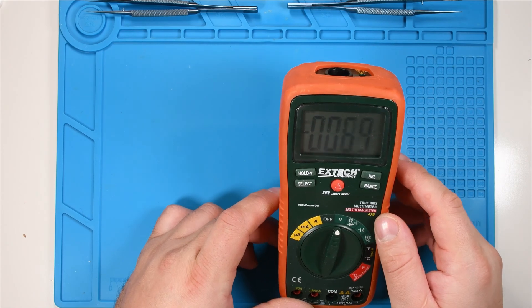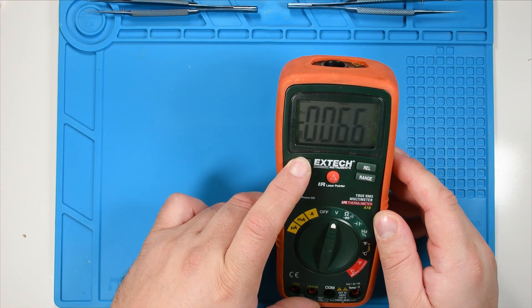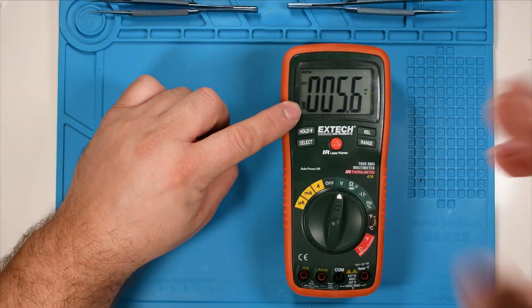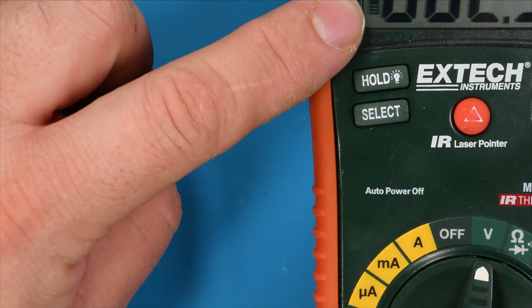As soon as I switch on the device and switch on the lighting, the indicator shows me that the battery is empty. So that I don't get an incorrect measurement, I change the battery.